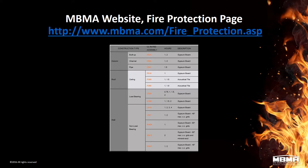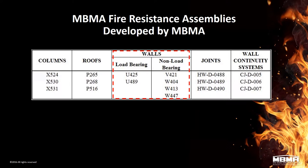Here's a summary highlighting the six UL assemblies that MBMA has sponsored over the years. The load bearing walls are U425 and U489. The non-load bearing walls — mainly exterior walls — are V421, W404, W413, and W447. As noted in part two regarding UL nomenclature, U, V, and W are the alphabetical prefixes for walls, and the 400 series indicates gypsum board protection. These are all consistent with that system.